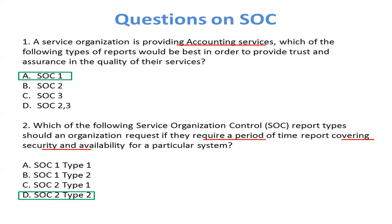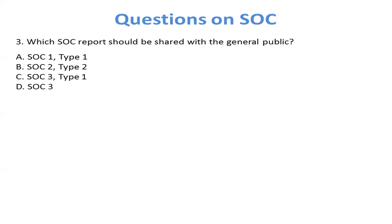Question 3: Which SOC report should be shared with the general public? The keyword is 'general public,' so SOC 3 is the only SOC report that should be shared with the general public. One tricky point: SOC 3 has no type — Type 1 is omitted. So the correct answer is D, SOC 3.